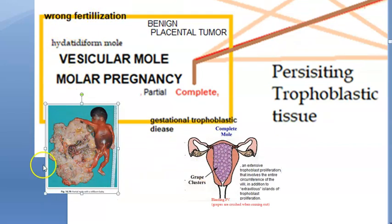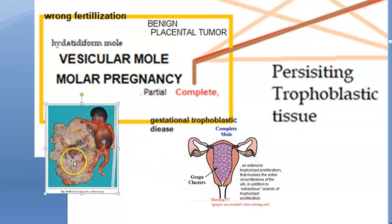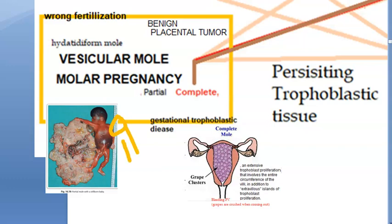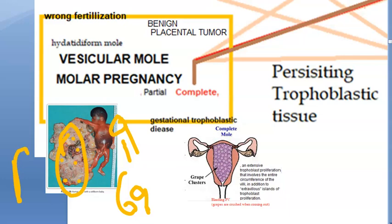With wrong fertilization you can have a partial mole, where the fetus is not able to survive. It is formed from one ovum fertilized by two sperms, giving 69 chromosomes — it will not survive. The placenta forms, but some of its villi become tumorous. This is called a partial molar pregnancy.